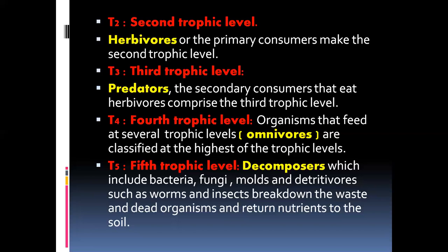Decomposers are very important because if this level doesn't exist within the ecosystem, dead organisms and dead bodies would block nutrients. Biogeochemical cycles — the carbon cycle, oxygen cycle, hydrogen cycle, and nitrogen cycle — would all be badly disturbed. That's why this decomposer level is also very important.